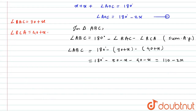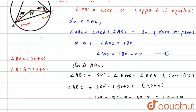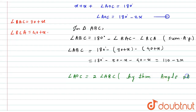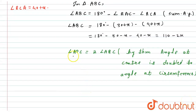Now, angle AOC is the angle at the center of the circle, while angle ABC is the angle at the circumference, and both are subtended by the same chord AC. By the theorem, the angle at the center is double the angle at the circumference.